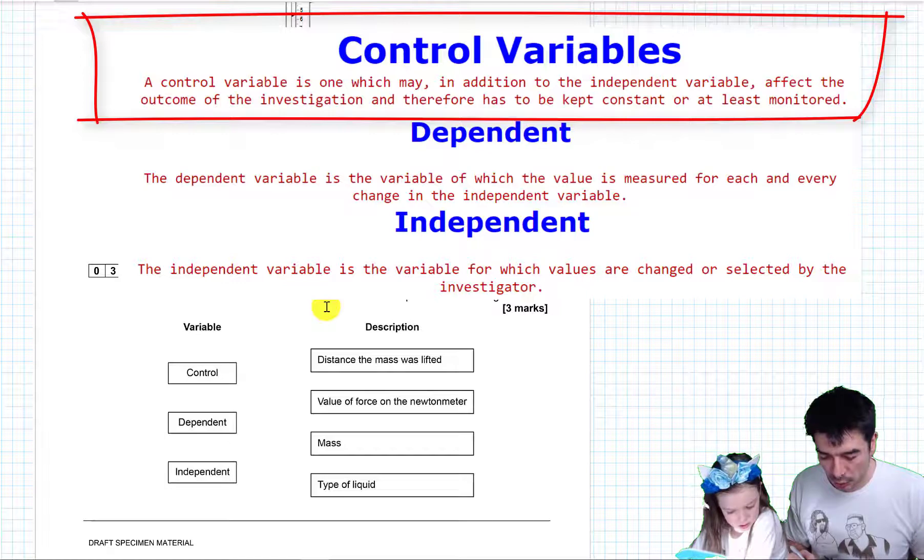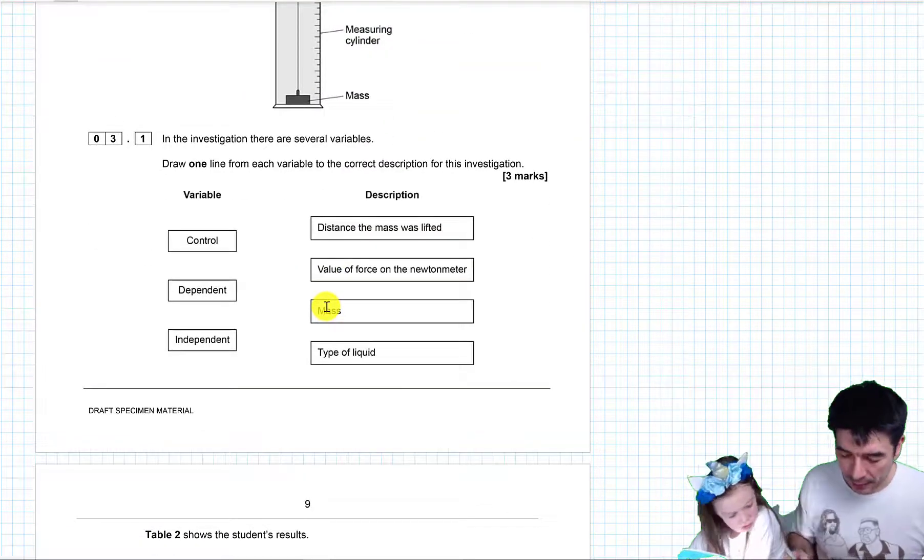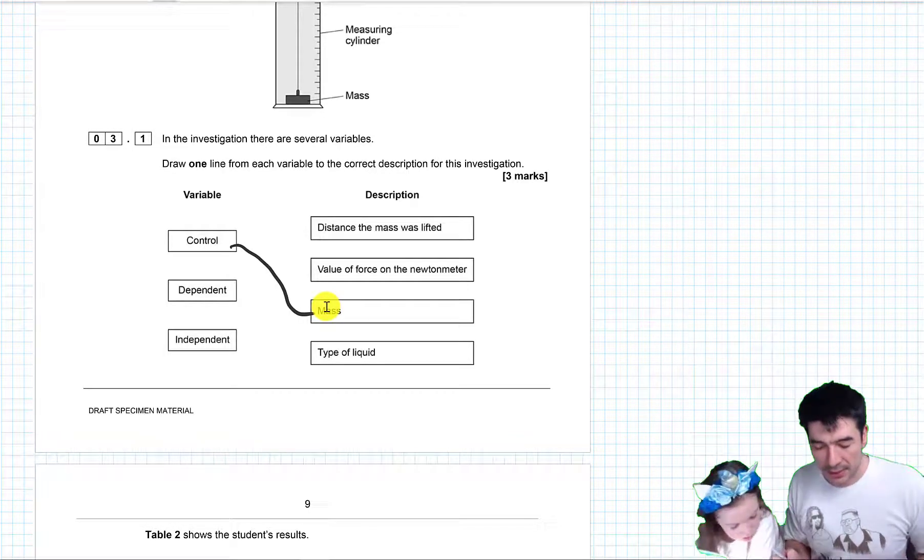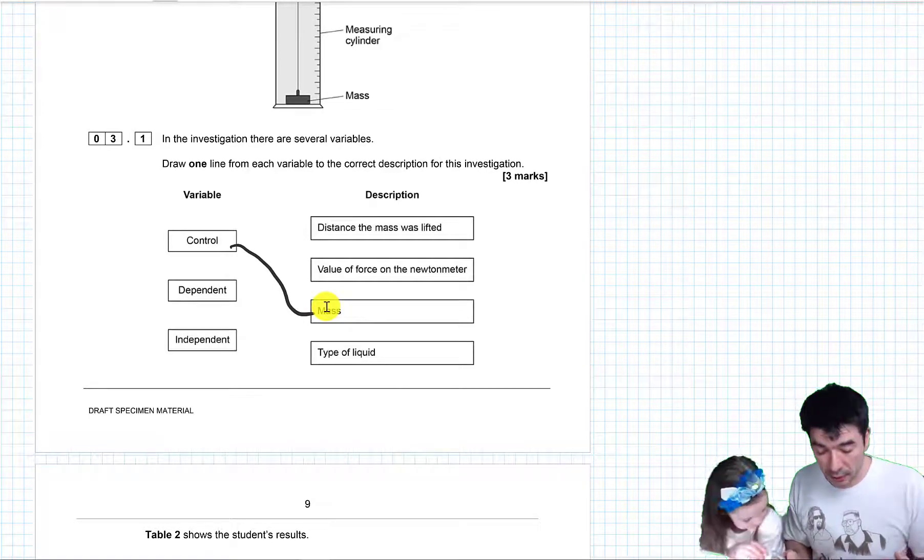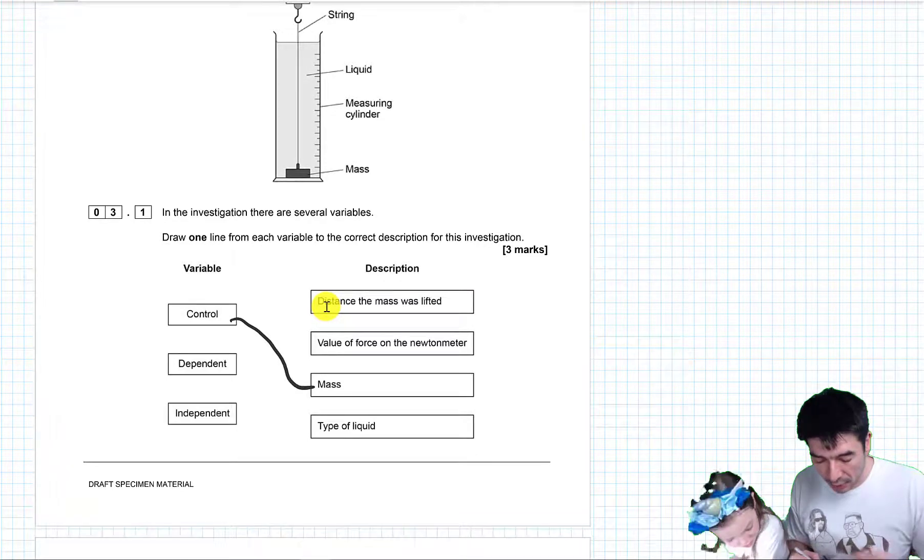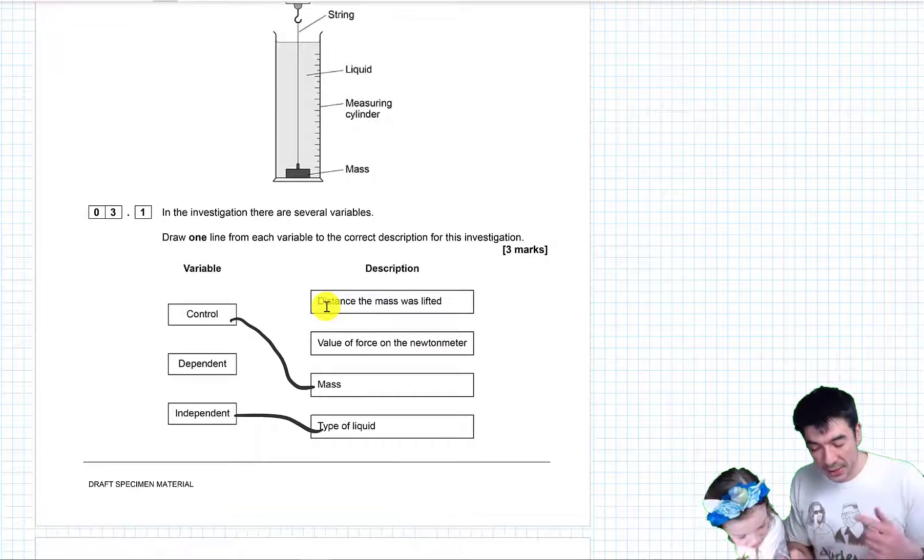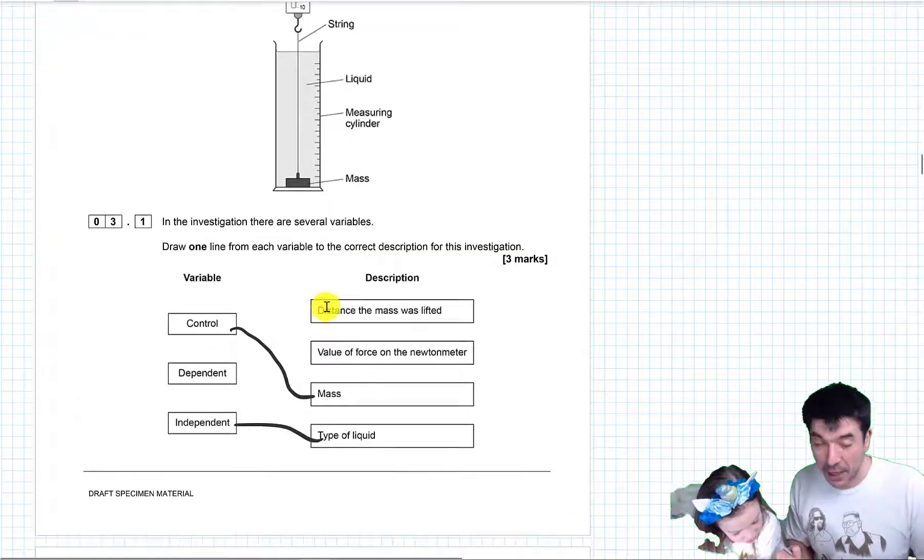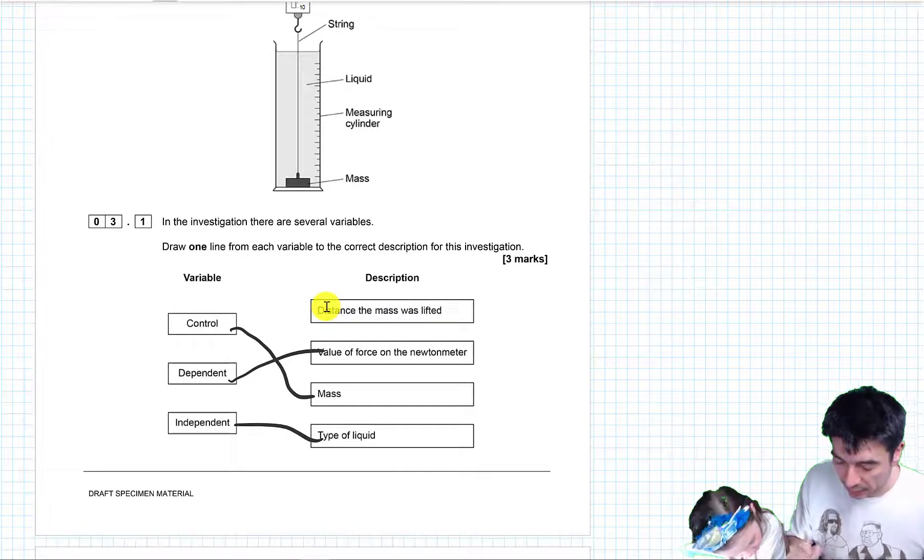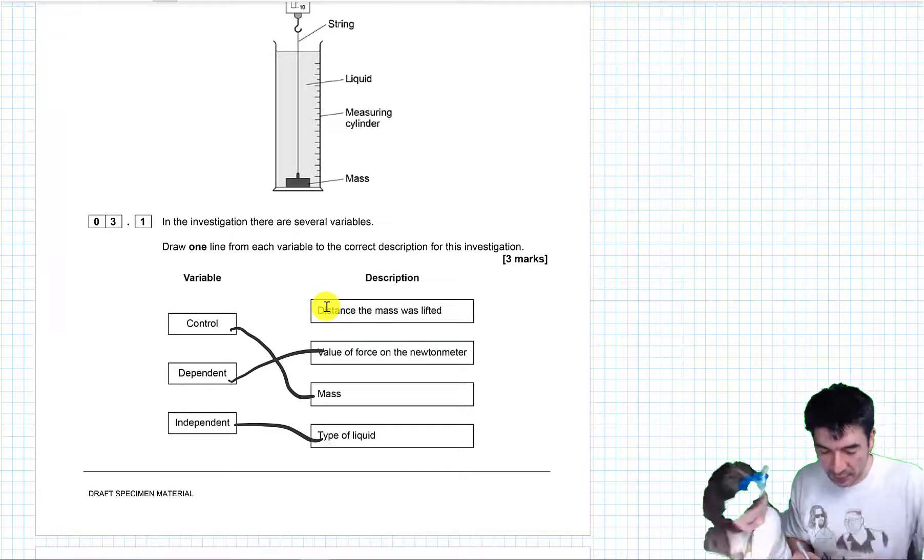So, what is being controlled here? They did say the speed would be the same the whole time, so I would have chosen speed. But they're also going to keep the mass the same, so the mass isn't changing either. What's changing though is the liquid, that's the only thing they're changing. So the independent one is the liquid. And then they see how this other thing depends on that. And the thing that they're interested in is how the force depends on the type of liquid. That's what they're trying to find out about. So that looks correct to me so far.